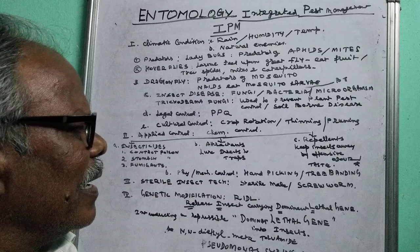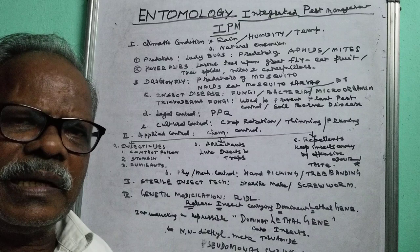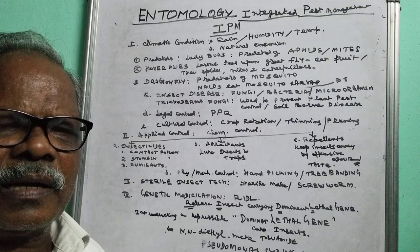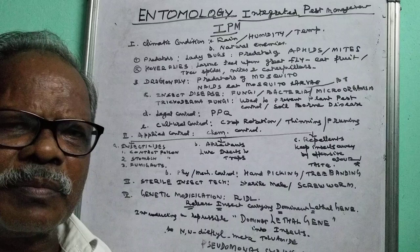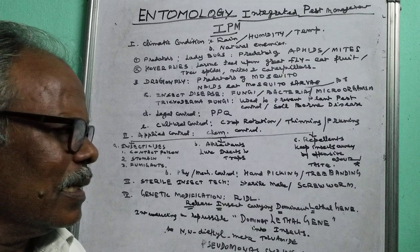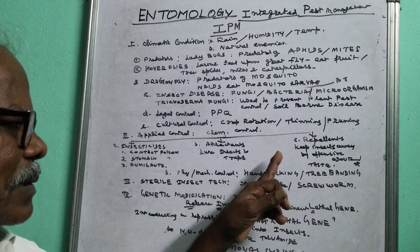And repellents keep insects away by offensive odor and taste. For example, whenever neem oil is sprayed, its offensive odor scares away the insect and it goes away from the affected plant or grain. That is called repellents — repellent chemicals are also used.